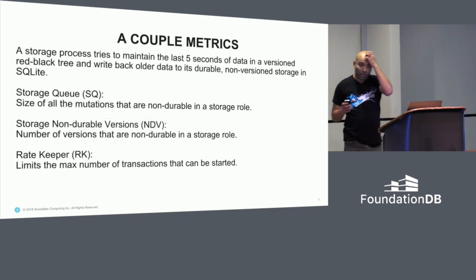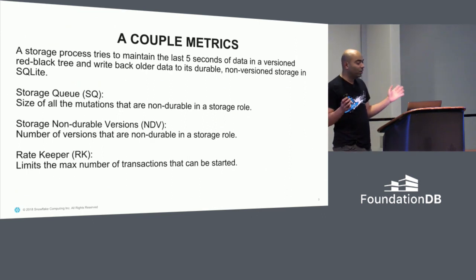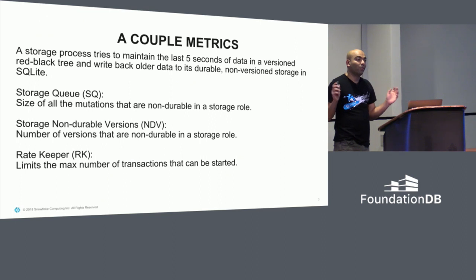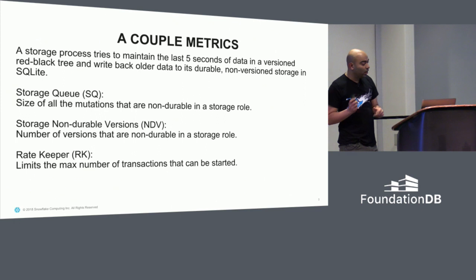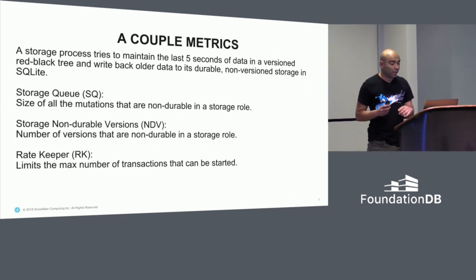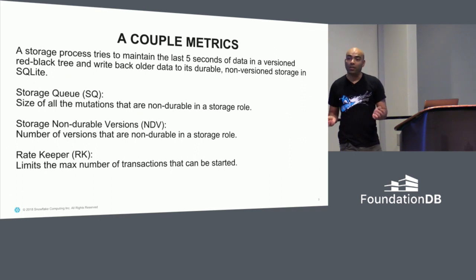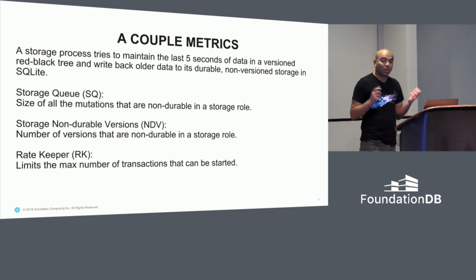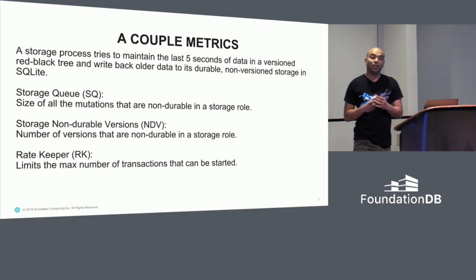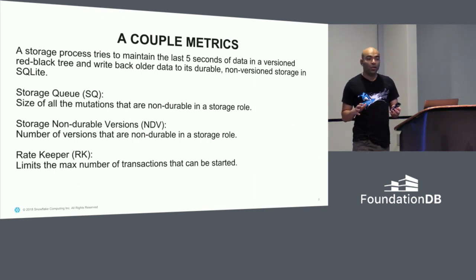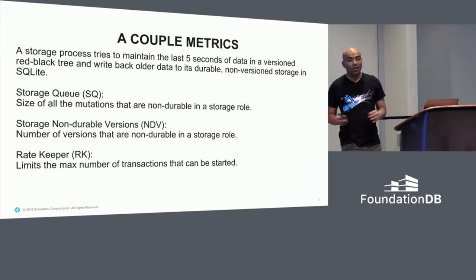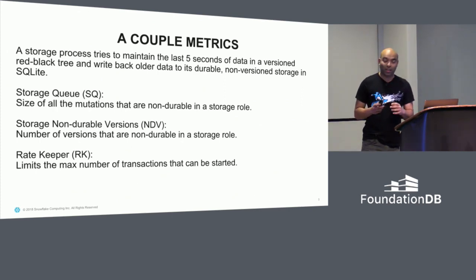A couple of metrics to give you context: as Steve mentioned, the storage node keeps five seconds of data in a version tree that are non-durable. This can grow and shrink in size. The storage queue is the size of these mutations. Another metric called non-durable versions is the number of versions not yet persisted to SQLite. When storage queue goes up, ratekeeper goes down; when NDV goes up, bad things happen.